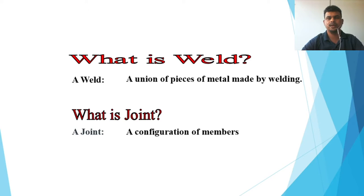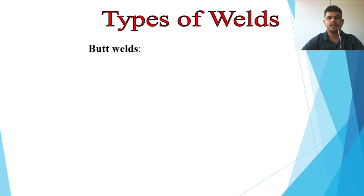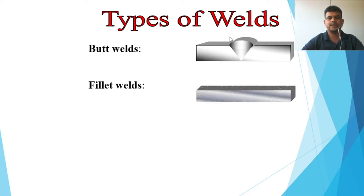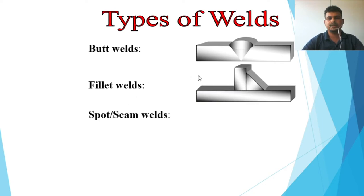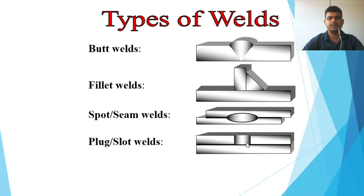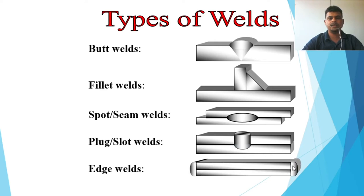The types of weld are: first, butt welds; second, fillet welds; third, spot or seam welds; fourth, plug and slot welds — where one part forms the plug or slot and welding is done inside; and fifth, edge welds.